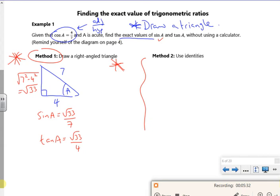If I'm going to use identities, I've got to use sin² A plus cos² A is 1. So sin² A plus 4 over 7 squared is 1. So sin² A plus 16 over 49 is 1.